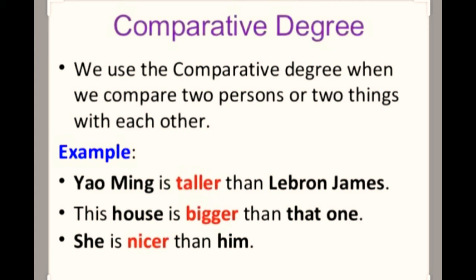In comparative degree, we compare two things with each other. Comparative degree — we compare two things, only two things, two people, two animals, two different things. For example, Yao Ming is taller than LeBron James. When we compare two things, we add E-R: tall becomes taller.